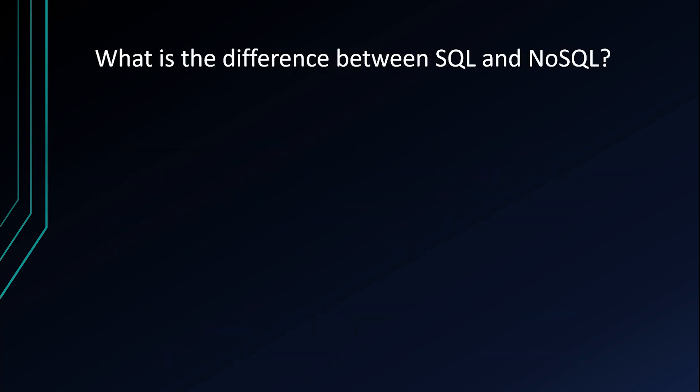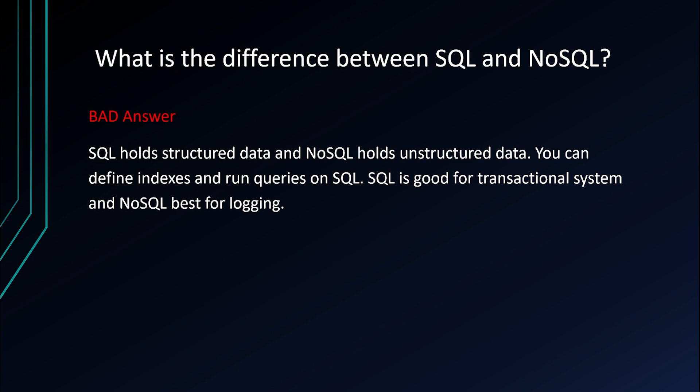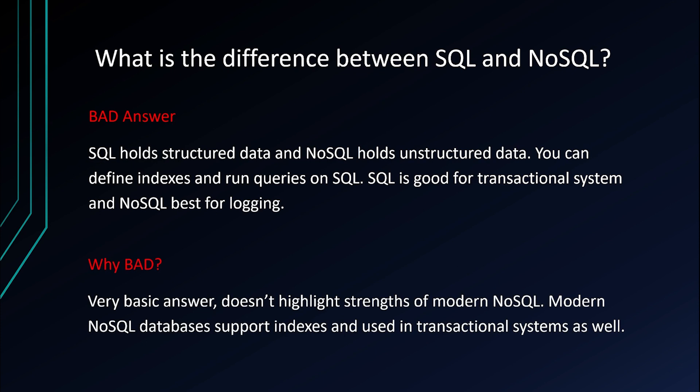Next question: what is the difference between SQL and NoSQL? The most common answer is: SQL holds structured data and NoSQL holds unstructured data; you can define indexes and run queries on SQL; SQL is good for transactional systems and NoSQL is best for logging. Why is this bad? It's a very basic answer — SQL stands for Structured Query Language, and just saying structured versus unstructured doesn't give much clarity. It doesn't highlight the strengths of modern NoSQL, and modern NoSQL databases such as DynamoDB support indexes and can be used in transactional systems as well.